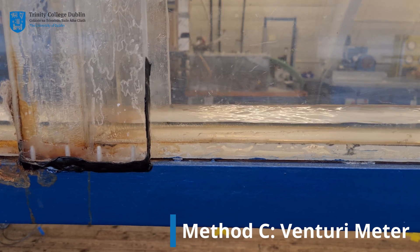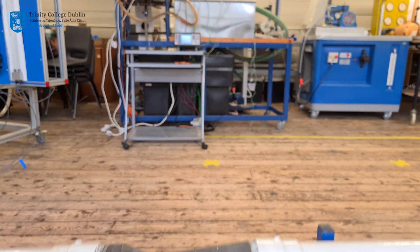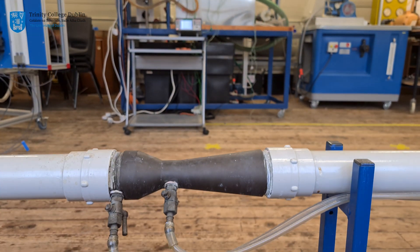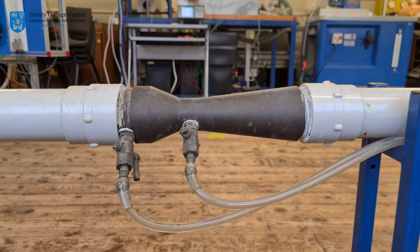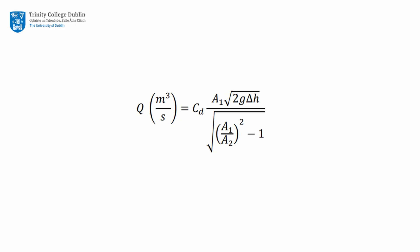Method C: Venturi meter. A venturi meter located on the inlet pipe can be used in conjunction with Bernoulli's principle to determine the flow rate based on the pressure differential across the surface. The pressure differential is visible here as the difference in head before and after the narrowing of the pipe. Using the following equation, we may determine the flow rate based on the venturi meter readings.